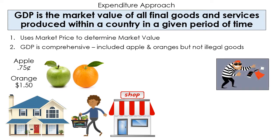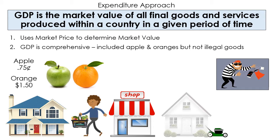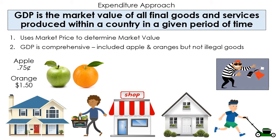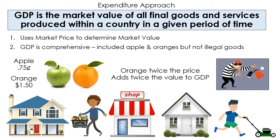GDP is very comprehensive. It allows us to understand how valuable one item is to an economy versus another. If people are willing to pay twice as much for an orange as for an apple, then oranges basically double their value to the economy compared to apples. We have to find out what all these items cost by using the available market price. That means GDP is going to fluctuate because market prices for items fluctuate.